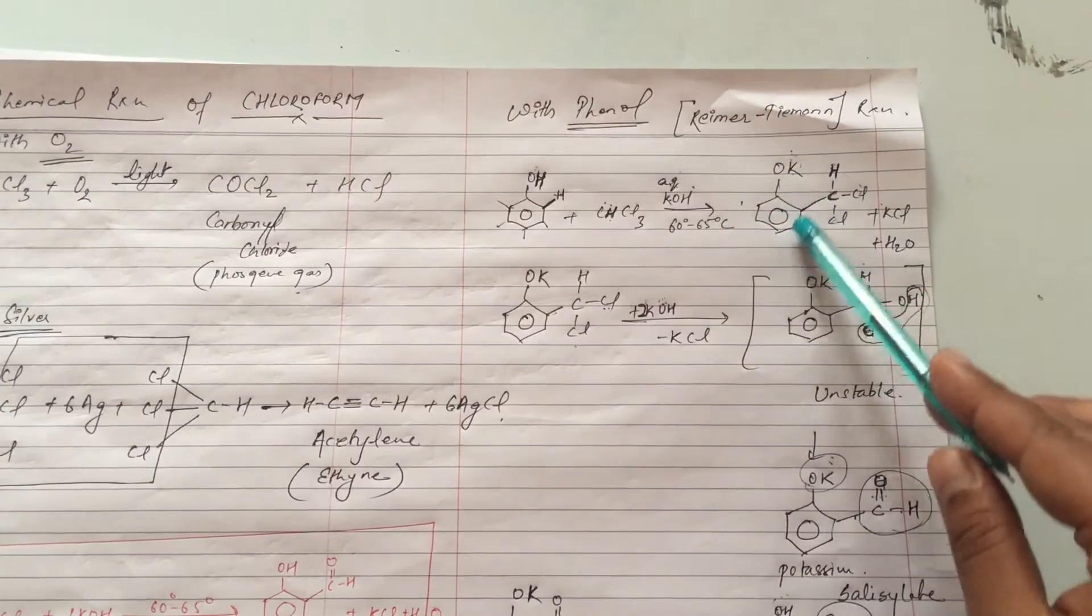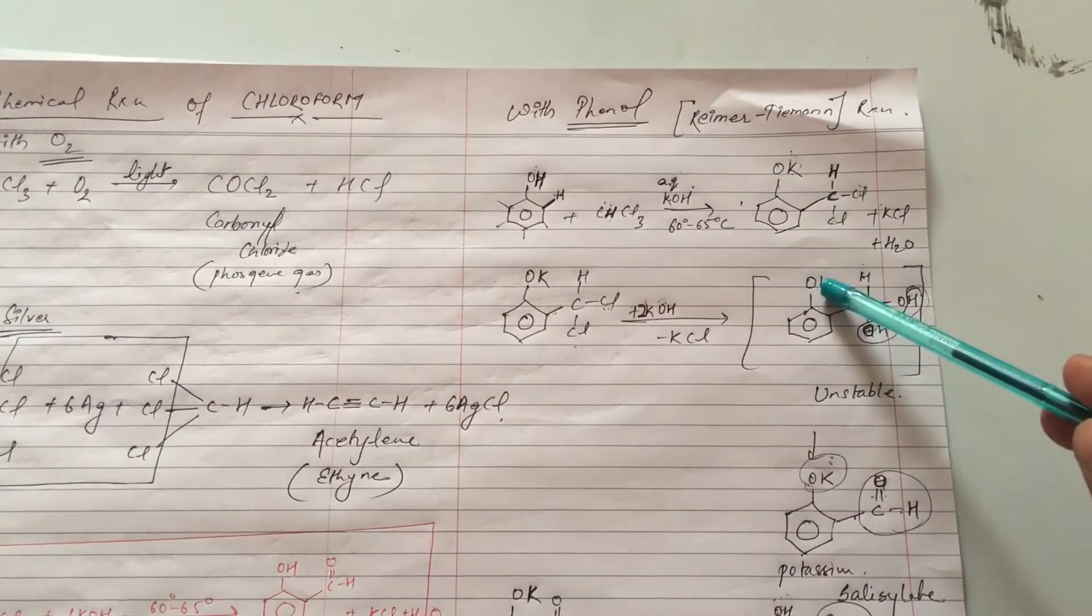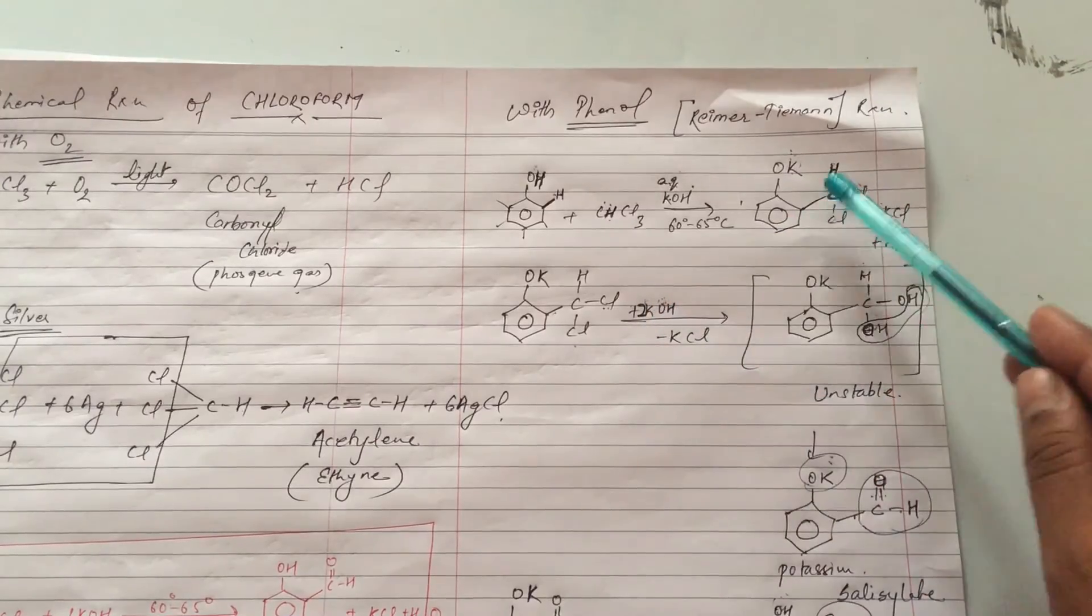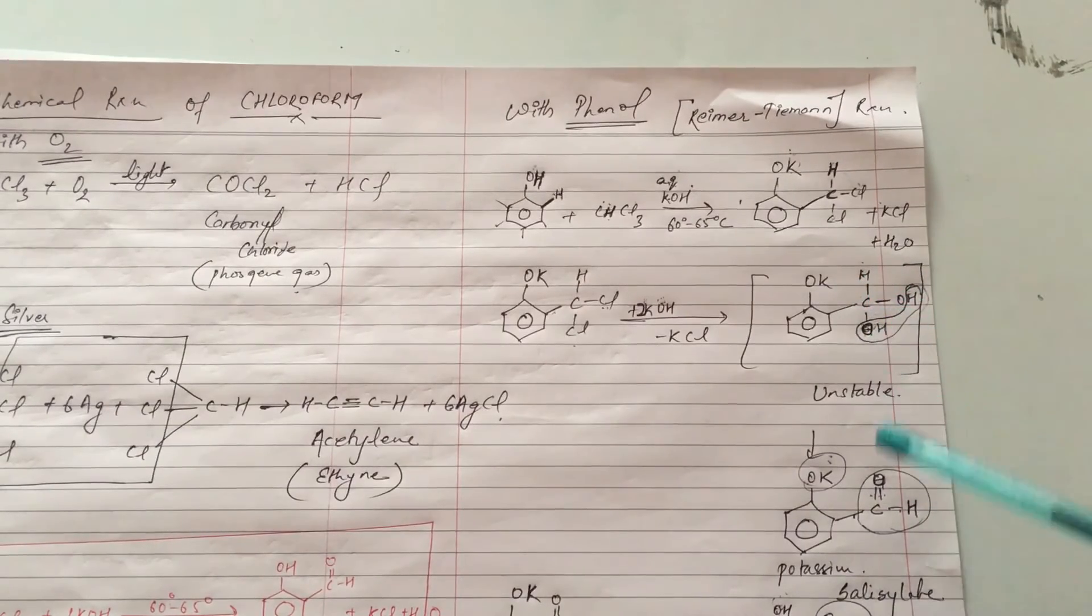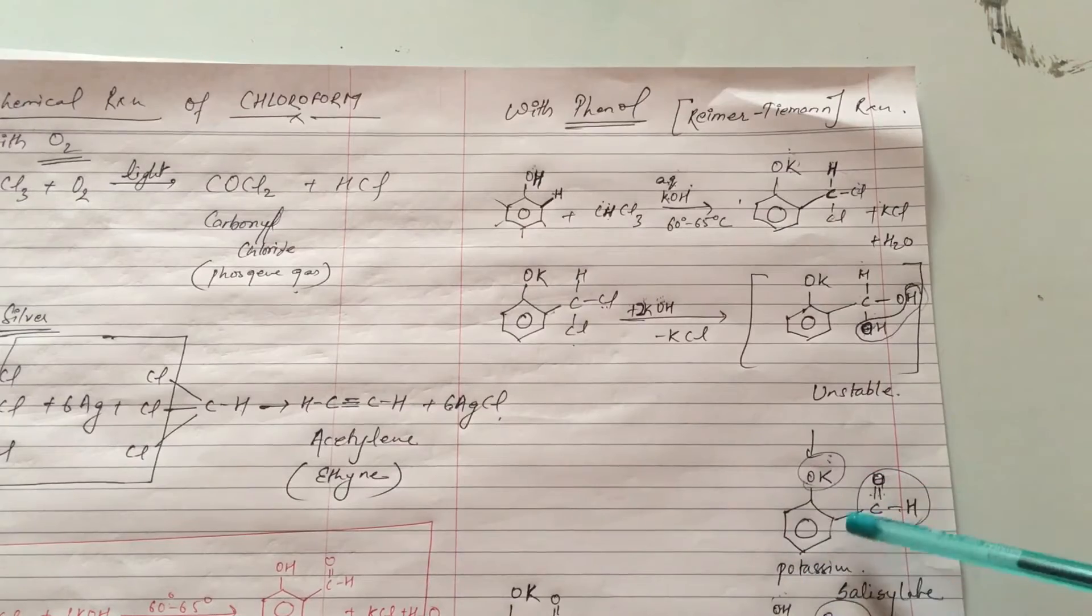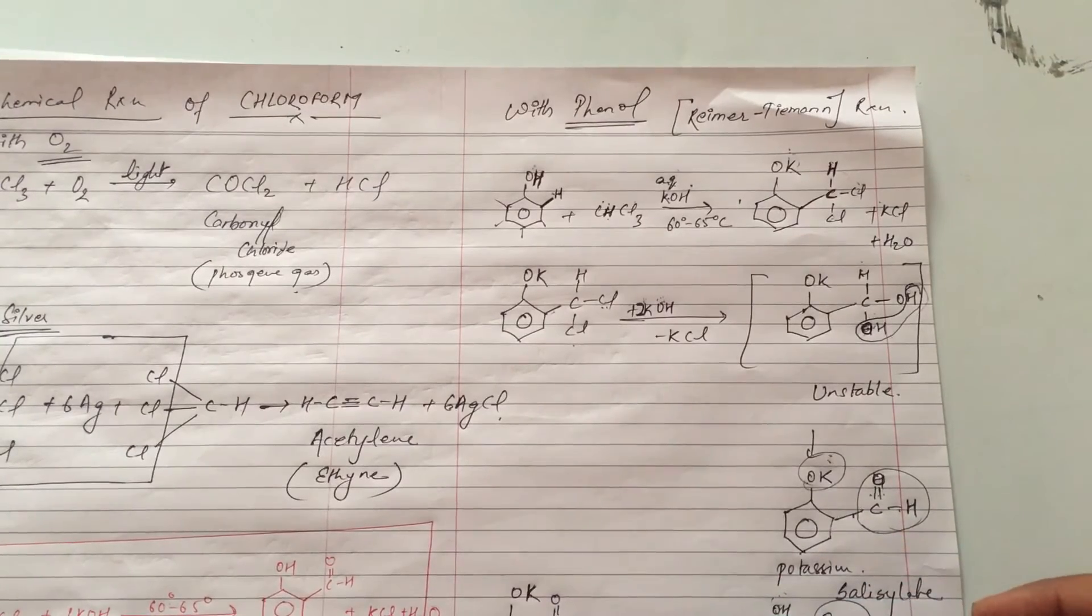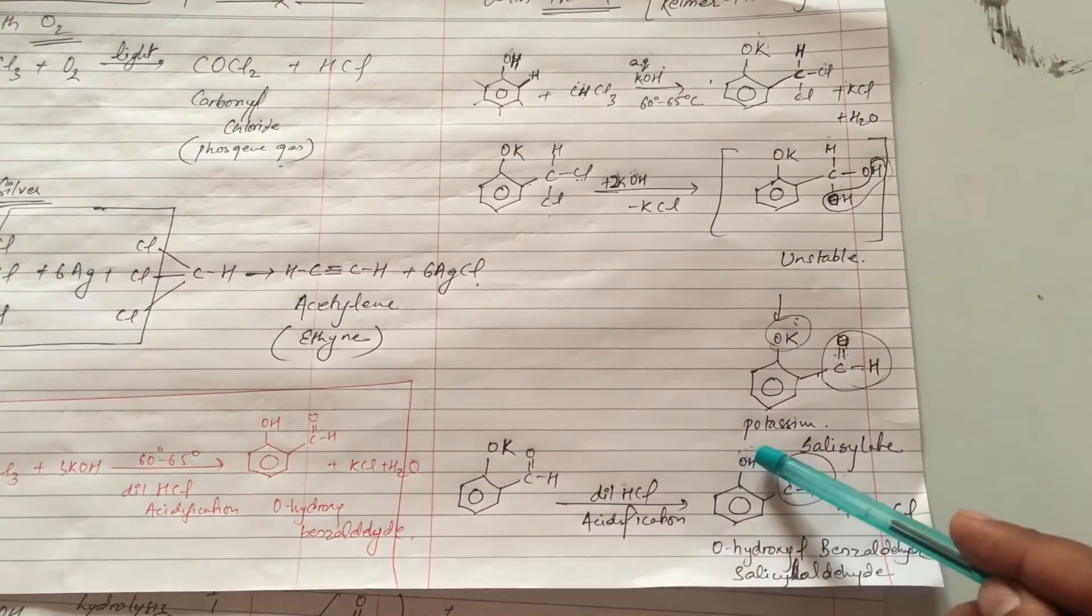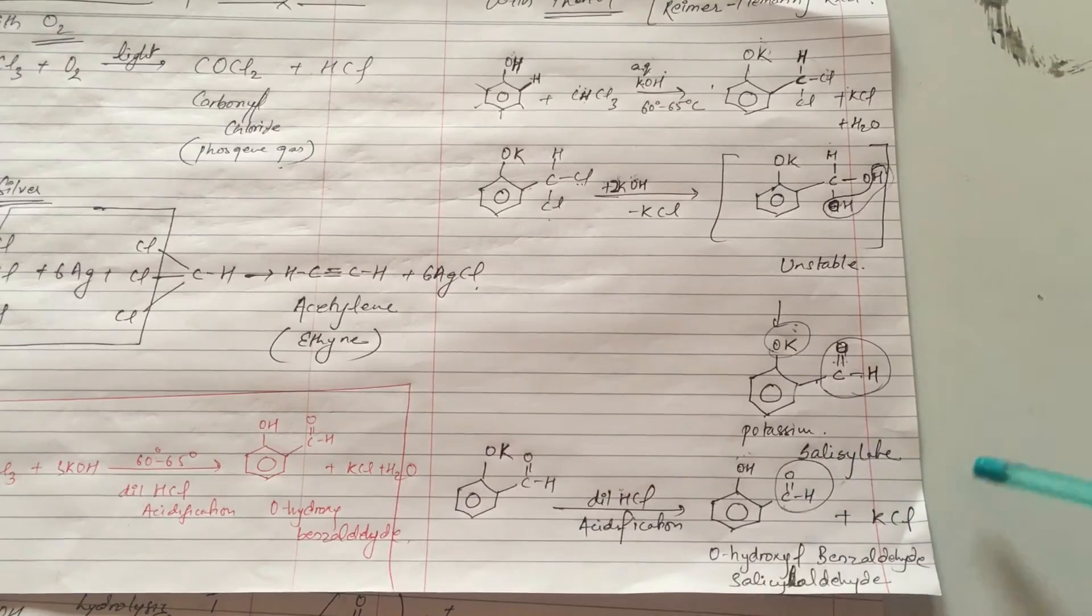First, potassium salt with phenyl group and here is CCl3 used. This forms a potassium salt. Ultimately, the phenyl group reacts forming the aldehyde product. In this way we form the Reimer-Tiemann reaction.